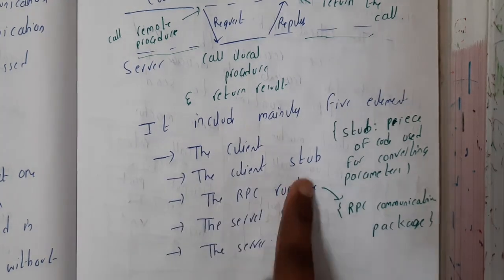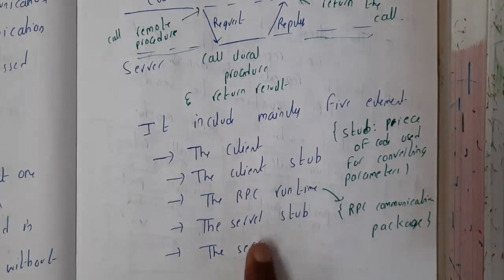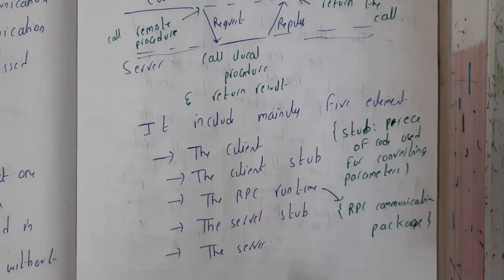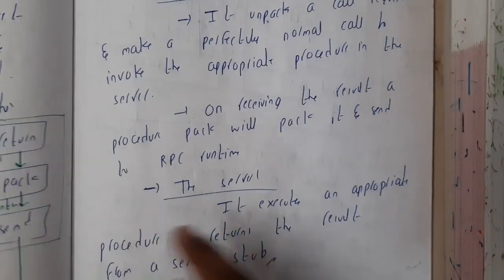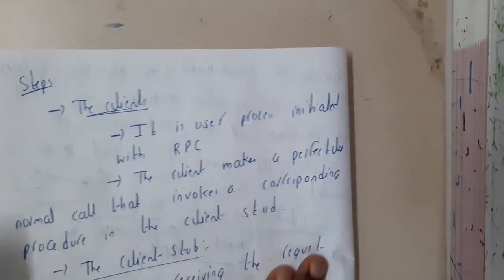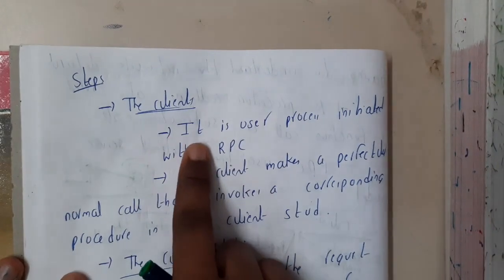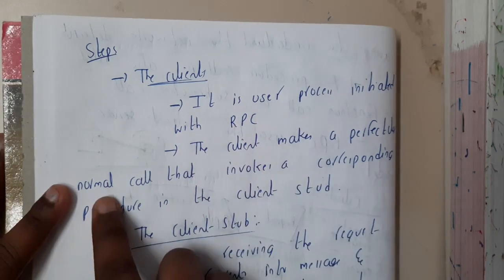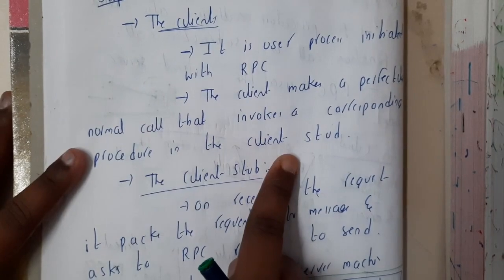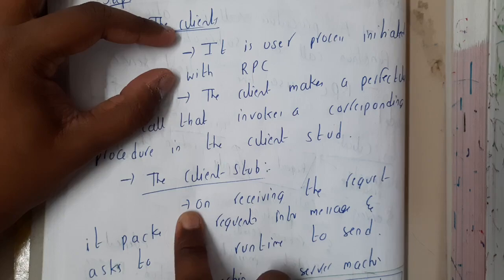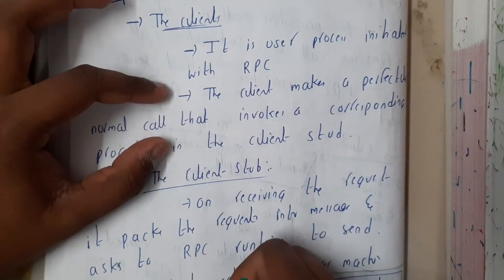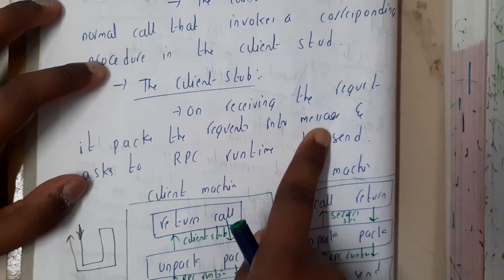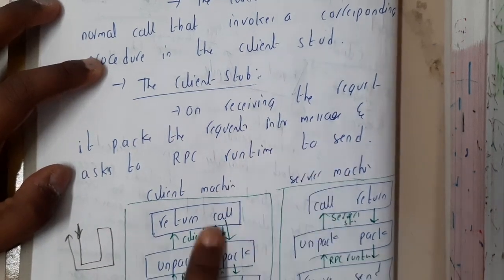A stub is nothing but a piece of code used to convert parameters. If it is on the client side we call it the client stub; if it is on the server side, the server stub. The RPC runtime is nothing but a communication package — the common layer between both sides. The client is the user process initiated with RPC; the client makes a normal call that invokes a corresponding procedure in the client stub.